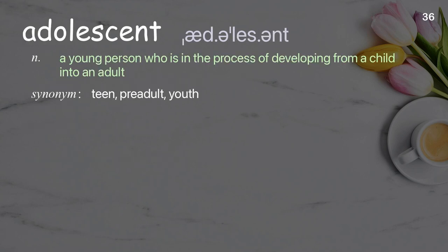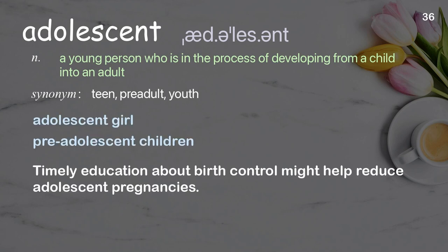Adolescent: A young person who is in the process of developing from a child into an adult. Examples: Adolescent girl, pre-adolescent children. Timely education about birth control might help reduce adolescent pregnancies.